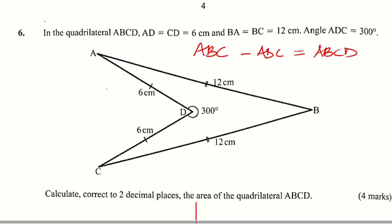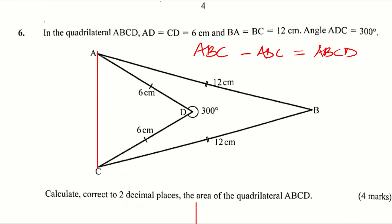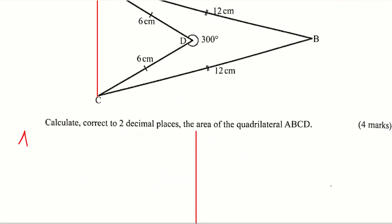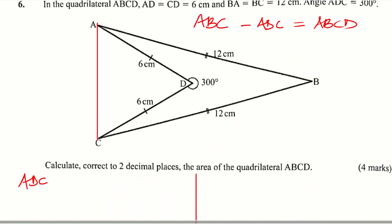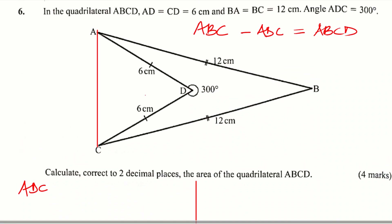Let me complete triangle ADC by drawing a line. So it's supposed to be like that, so that I can start by calculating the area of this triangle ADC. When you look at that triangle, it is isosceles, and since you have this angle as 300 degrees, this angle here will be equal to 60 degrees — angles at a point. Now having this angle as 60 degrees, we have this side as 6 centimeters and this side as 6 centimeters, so it is possible to use the cosine rule to get the length AC.